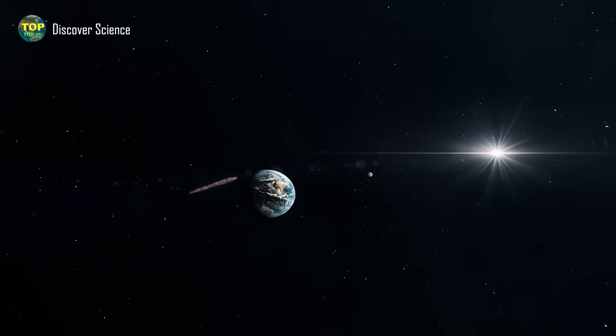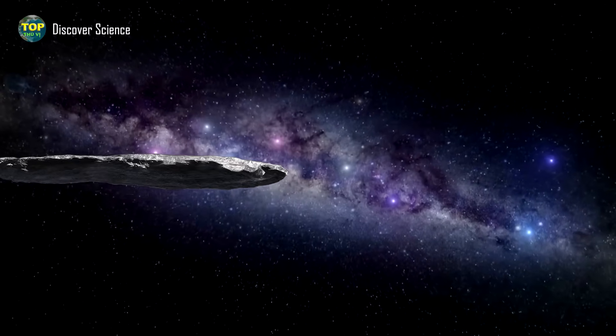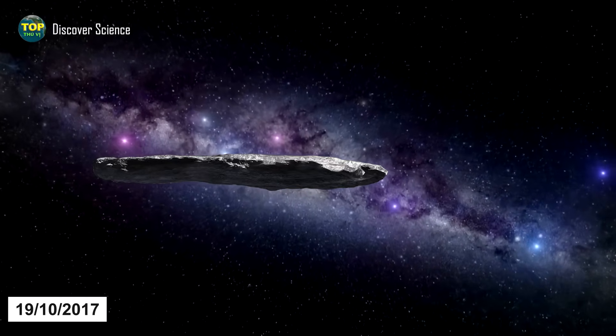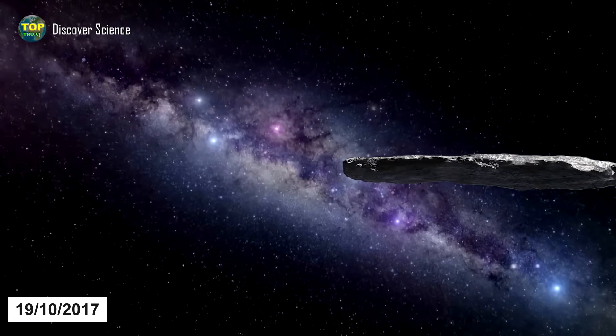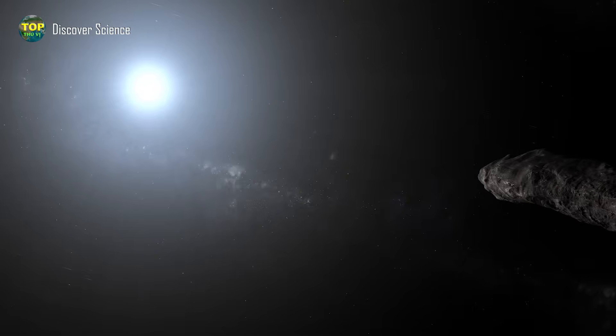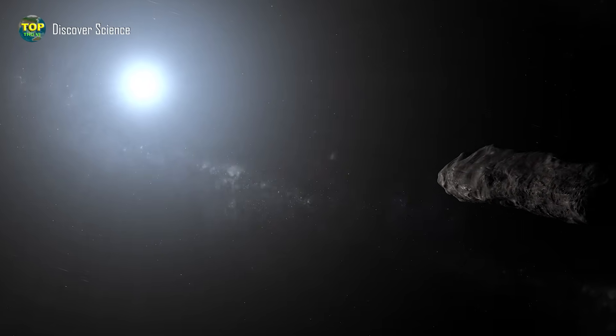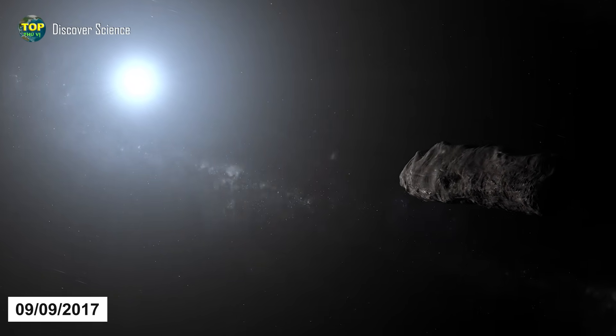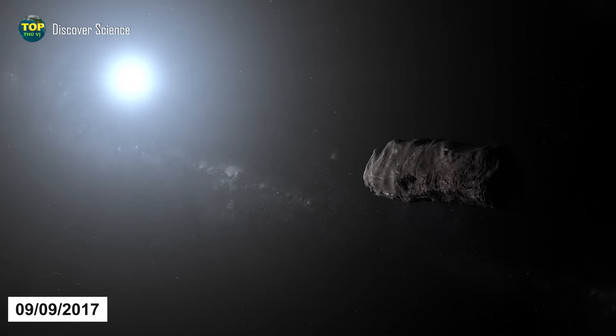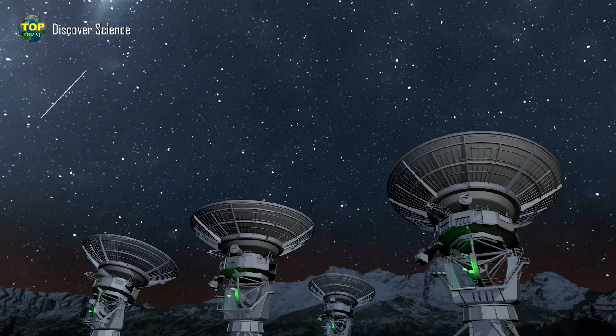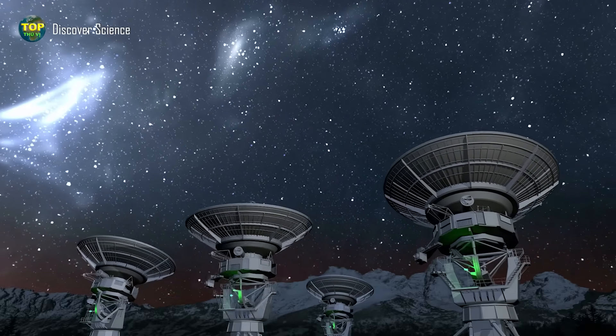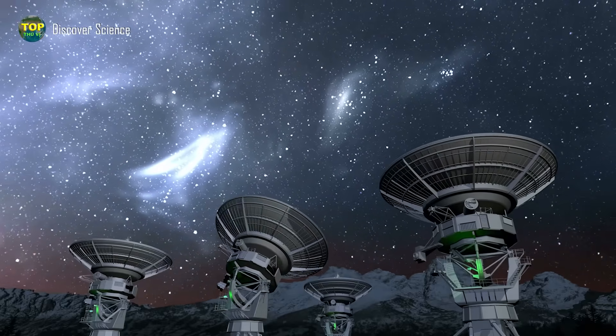'Oumuamua was first discovered on October 19th, 2017, by astronomers at an observatory in Hawaii while it was already on its way out of the solar system. In fact, it had made its closest approach to the sun on September 9th, 2017. However, likely due to its small size and dim brightness, 'Oumuamua easily slipped past the watchful eyes of telescopes and entered the solar system undetected.